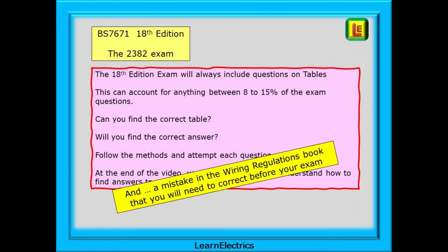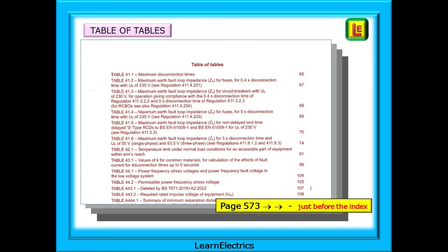And there's a mistake in the Wiring Regs book that you will need to correct before your exam. We will show you the error and what to do about it. In this video everything starts with the table of tables which is found on pages 573 onwards. The easiest way to find it is to remember that it comes immediately before the index which is the last item in the book. Pause the video and look for it now. It's important that you can find it quickly and easily in the exam.